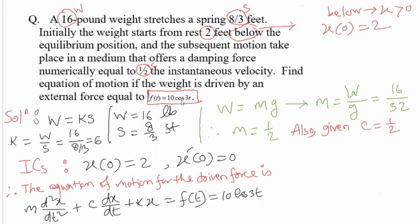From the given data: weight W = 16 pounds, spring stretch s = 8/3 feet, and β (or c) = 1/2. We know W = ks, so substituting W and s we get k = 6. Similarly, from W = mg with g = 32, we get m = W/g = 16/32 = 1/2. Also, c = β = 1/2 as given.